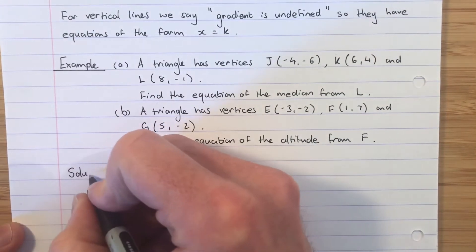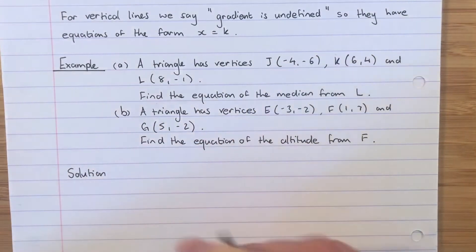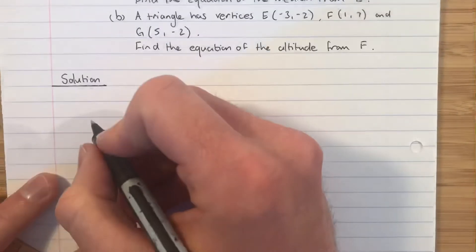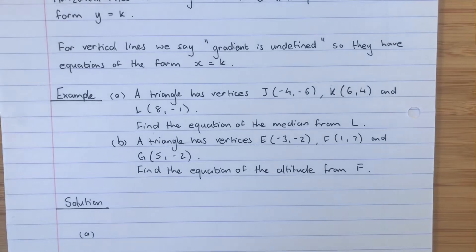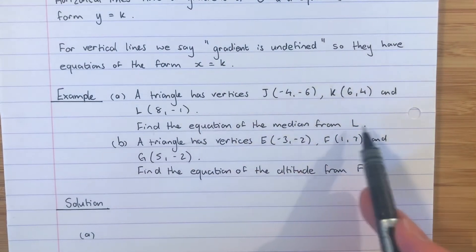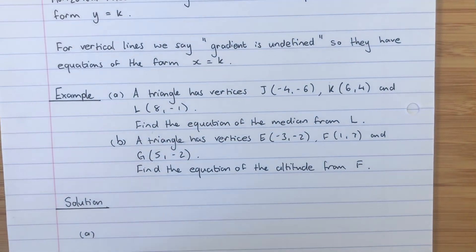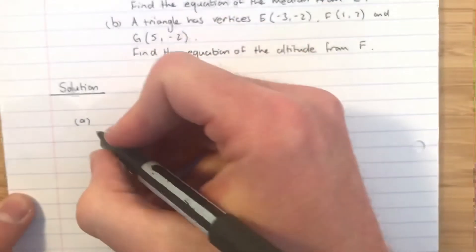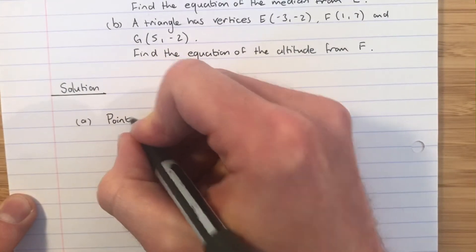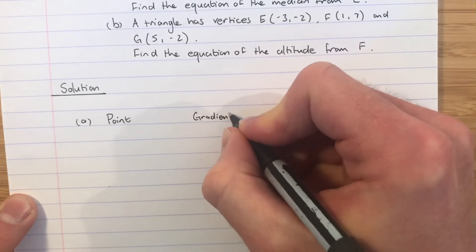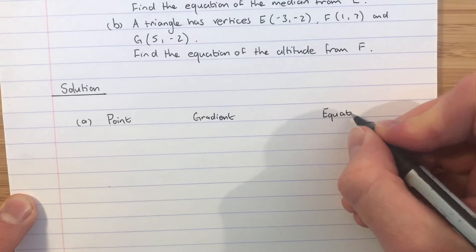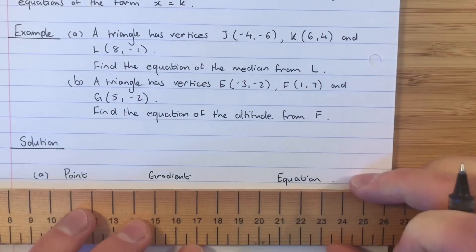Solution Part A. You'll notice there is nothing specifically to tell you the answer is going to be a horizontal or vertical line — you have to spot that yourself, and the best way is with a sketch. However, we'll follow our process: finding the equation of a straight line requires a point, a gradient, and an equation. Those three headings give us a starting point.